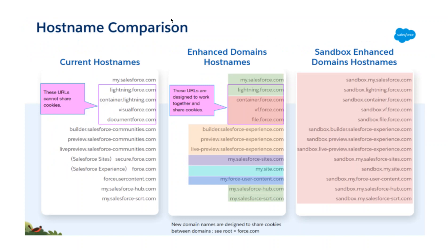Here is a hostname comparison chart. This shows the current hostname, the enhanced domain hostname, and the sandbox domain hostname. Right now you have something like 'lightning.force.com' or 'my.salesforce.com'. After changing to enhanced domains, it will be 'sandbox.lightning.com' for sandbox. For 'my.salesforce.com', it will be 'sandbox.my.salesforce.com'. These are the enhanced domain hostnames, and the sandbox enhanced domain hostnames. You can see 'sandbox' is added to identify whether it's a sandbox or not.